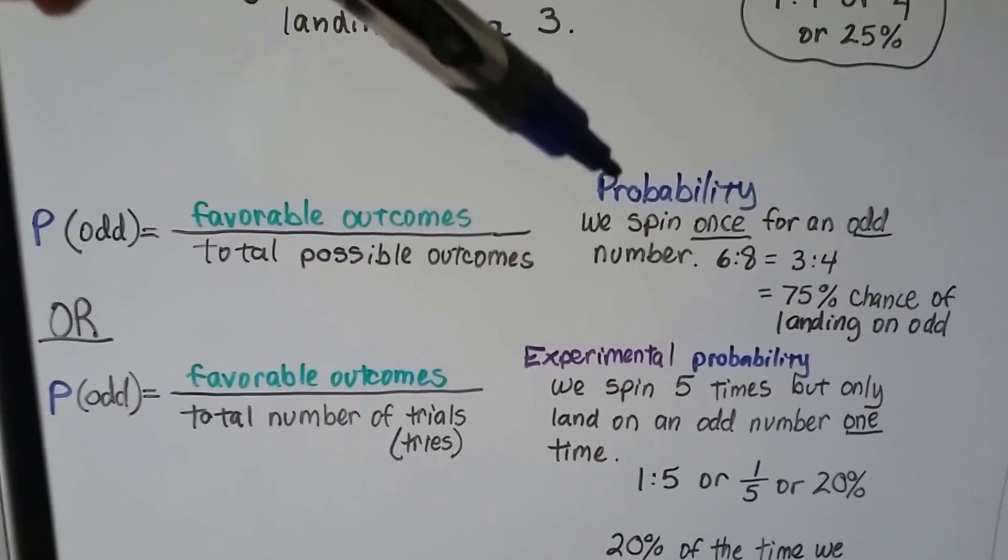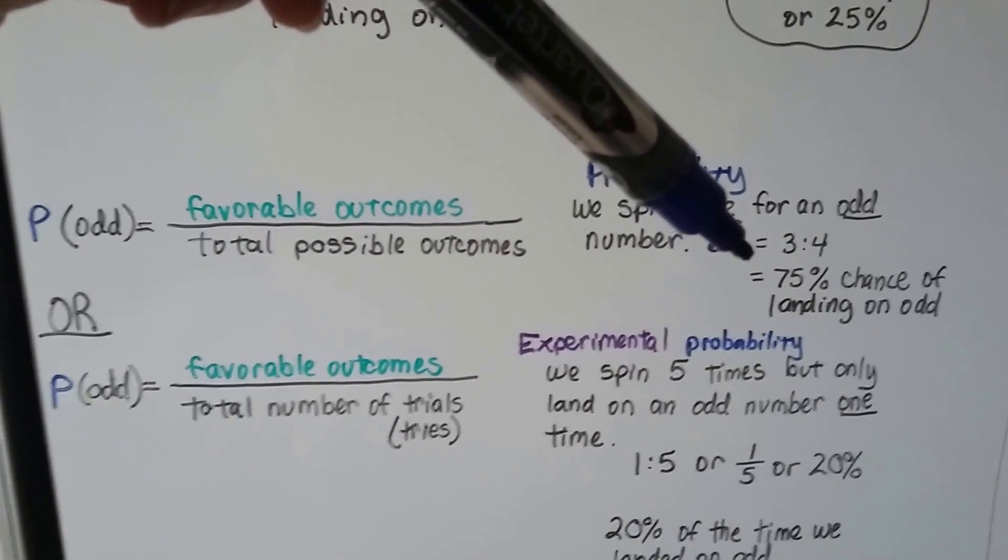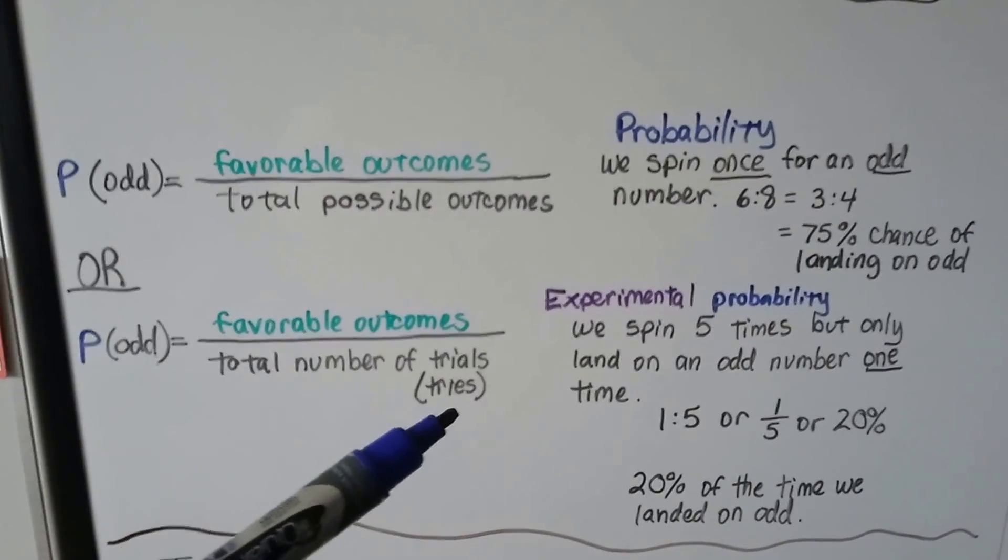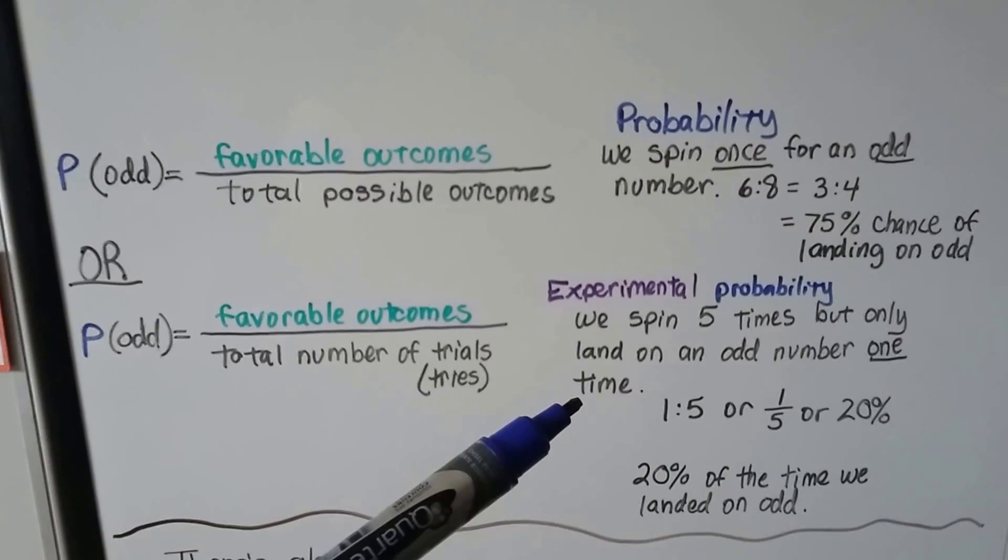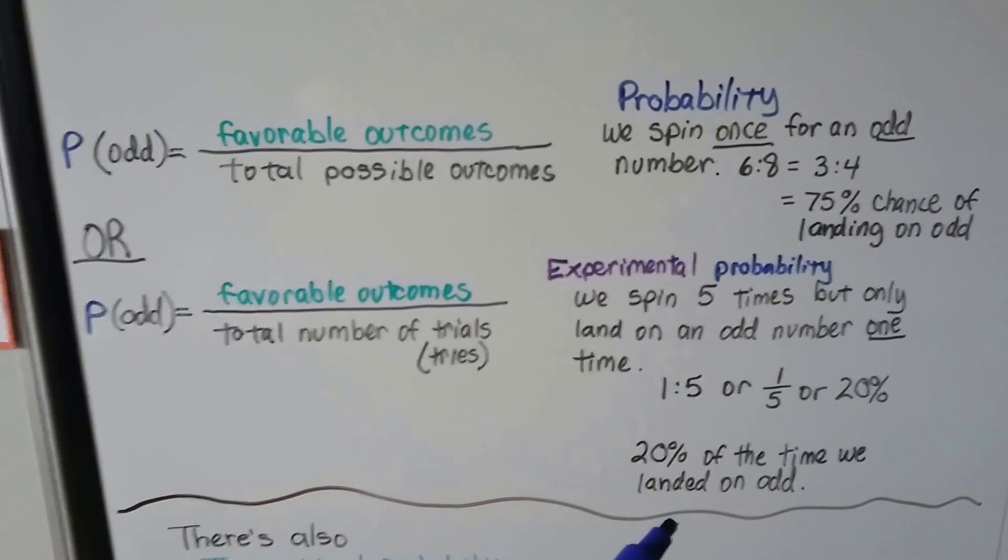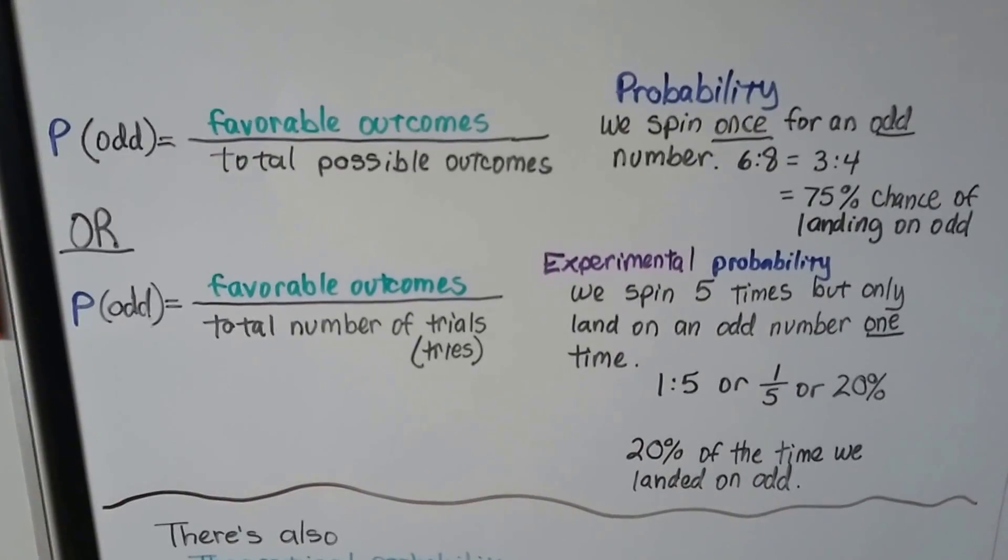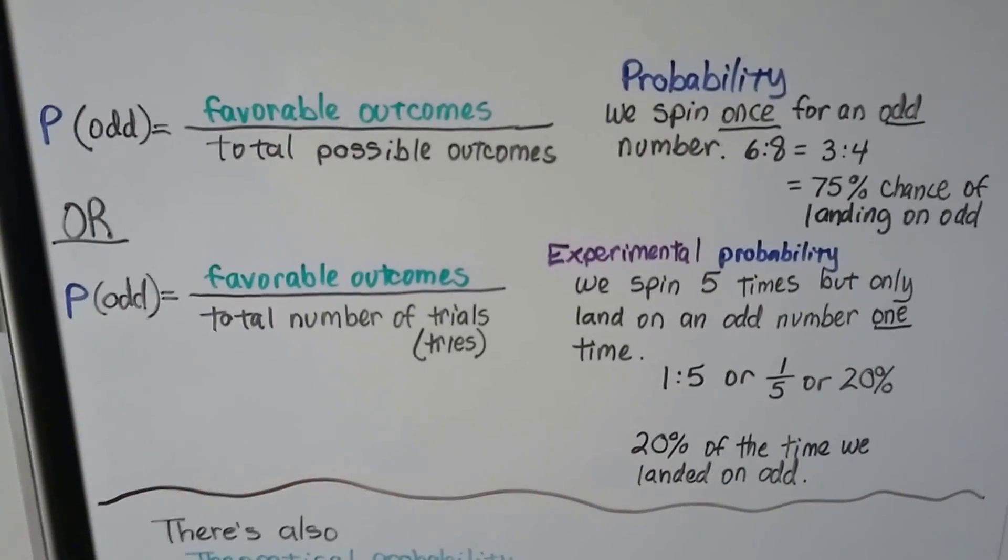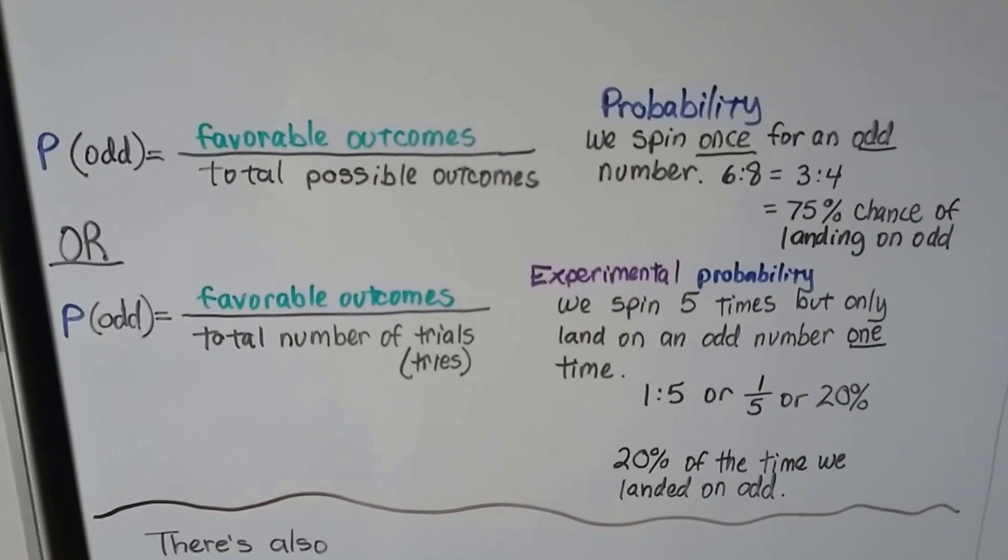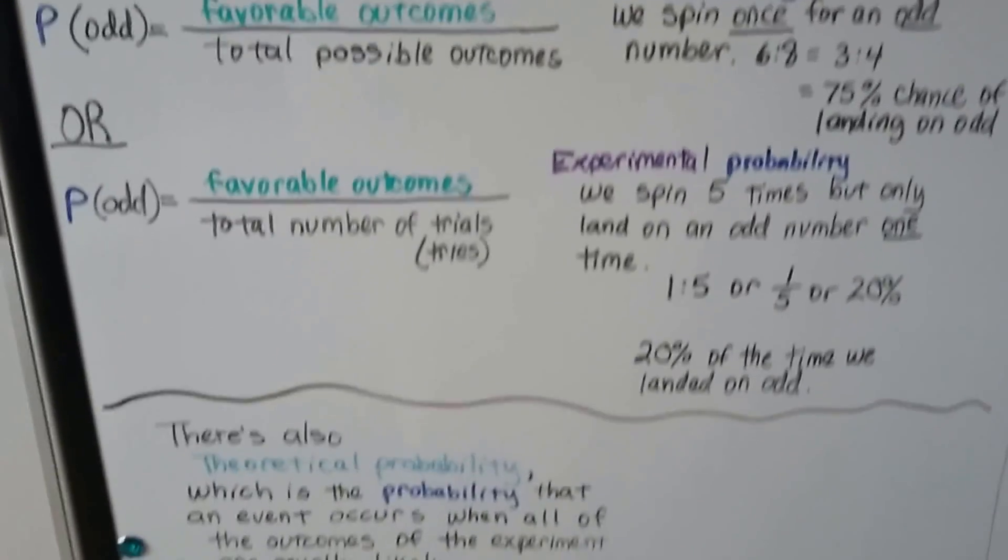So the event trying to find odd is what would go here. And we spin once for an odd number. We've got a 75% chance on landing on an odd number. But for experimental probability, let's say we spin it five times and we only landed on an odd number one time. Well, then our result was 20% of the time we landed on an odd. I know this can be confusing, but it doesn't really get very deep into it in the test. It might only have one or two problems for this. But if you can get them right, it's more of a chance of passing the test.